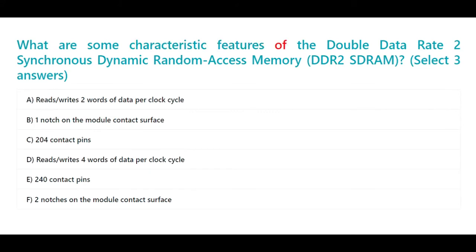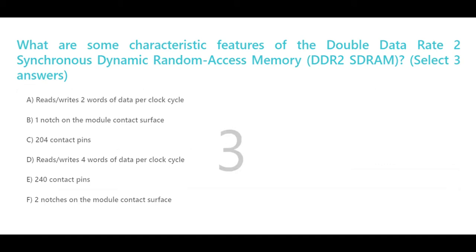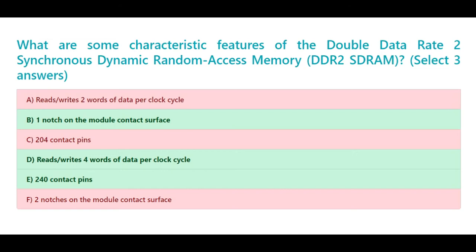What are some characteristic features of the Double Data Rate 2 Synchronous Dynamic Random Access Memory (DDR2 SDRAM)? Select three answers. A. Reads/writes two words of data per clock cycle. B. One notch on the module contact surface. C. 204 contact pins. D. Reads/writes four words of data per clock cycle. E. 240 contact pins. F. Two notches on the module contact surface. The correct answers are B. One notch on the module contact surface. D. Reads/writes four words of data per clock cycle. E. 240 contact pins.